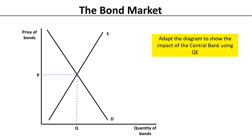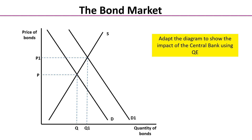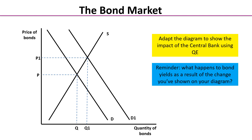Hopefully you've adapted your diagram to show a rise in the demand for bonds. Remember, the central bank buys the IOUs — the bonds — back from institutions: financial institutions, pension funds, and corporations. That demand to buy the bonds back will increase the demand for bonds, which in turn increases the market price of the bonds. The face value hasn't changed, but the market price has gone up. And as we saw in the first part of this lesson, if the market price of bonds goes up, then the yield will fall.